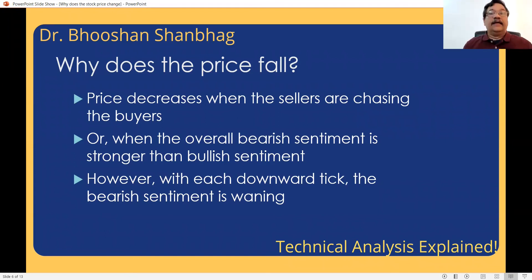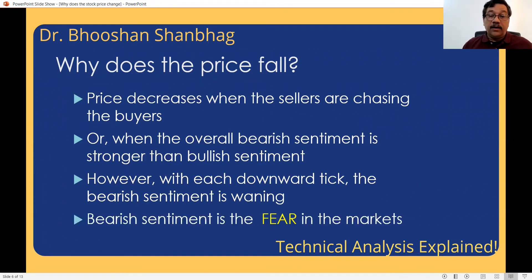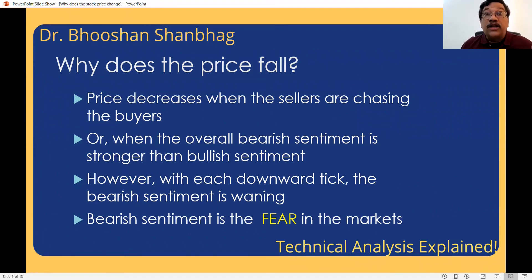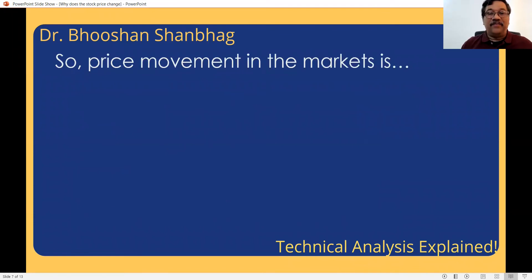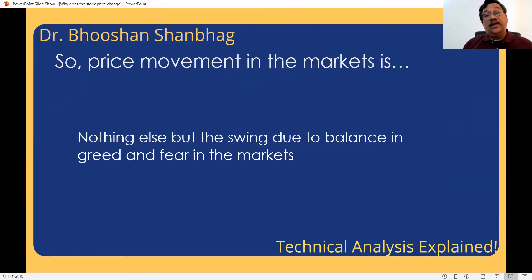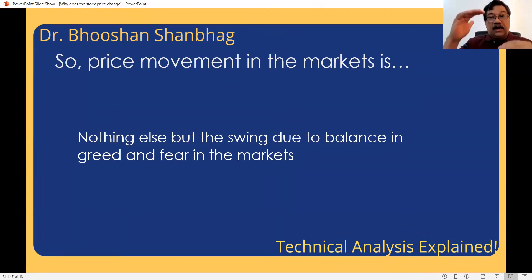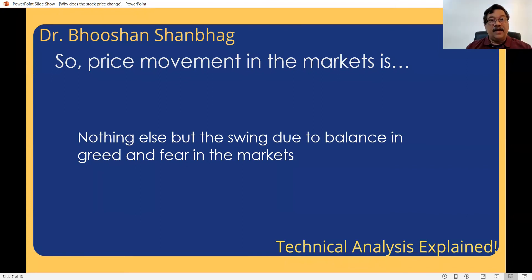The bearish sentiment goes on decreasing as the prices go on falling, because that much supply is consumed. Why do we get bearish sentiment? Bearish sentiment is nothing else but fear in the markets — the fear that what if the stock goes down, let me sell it at whatever price I am getting and get out. Price movement in the market is nothing else but a balance between greed and fear, swinging up and down. When greed is increasing, price is going up. When fear is increasing, price is coming down.